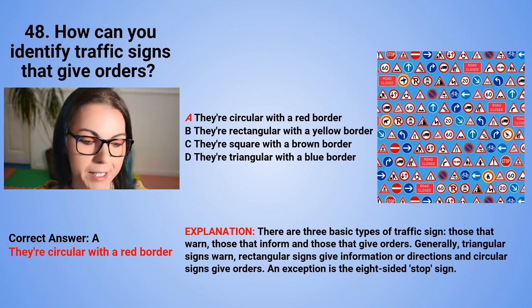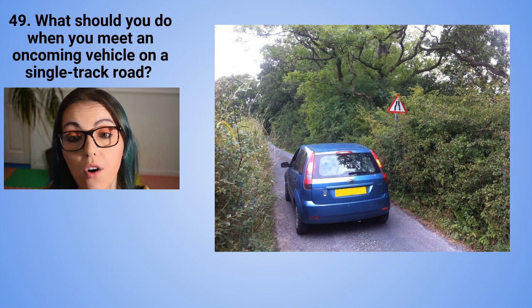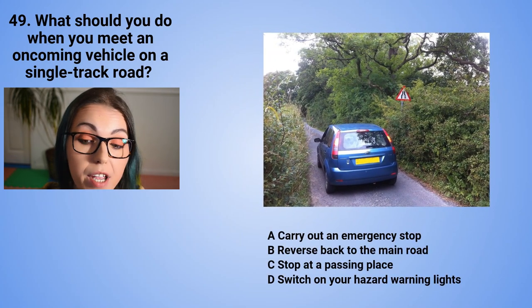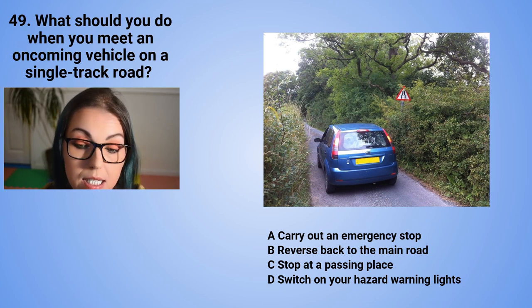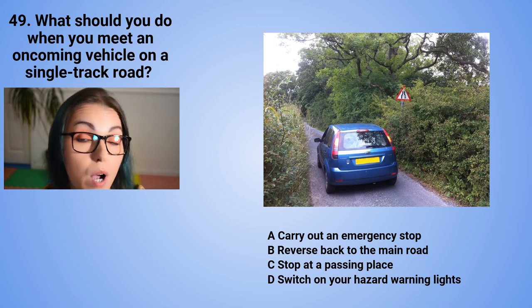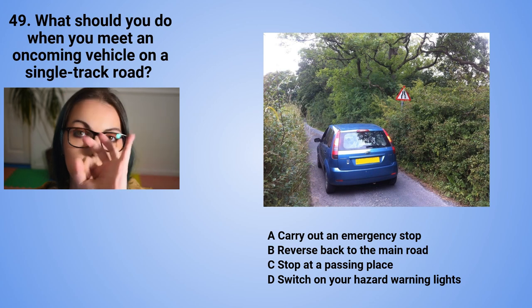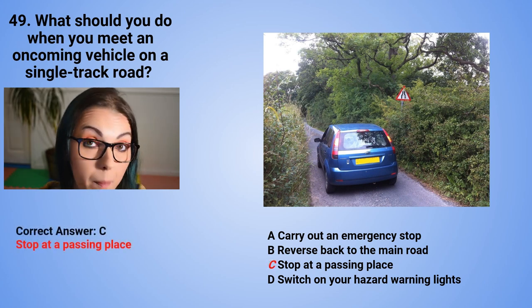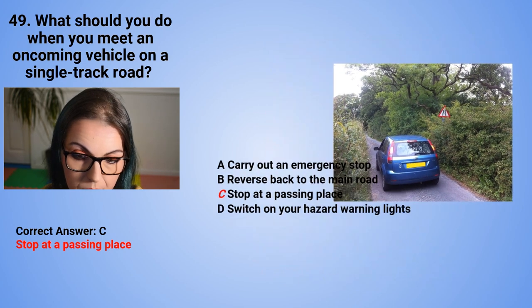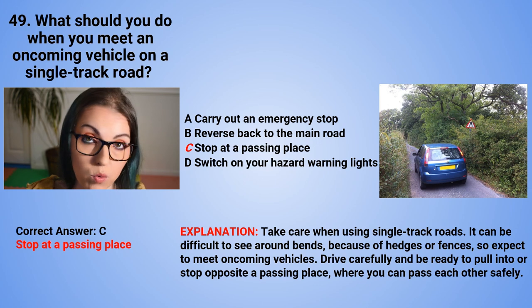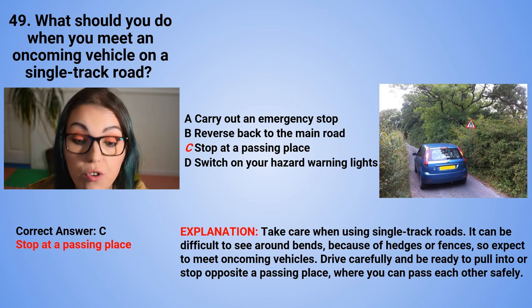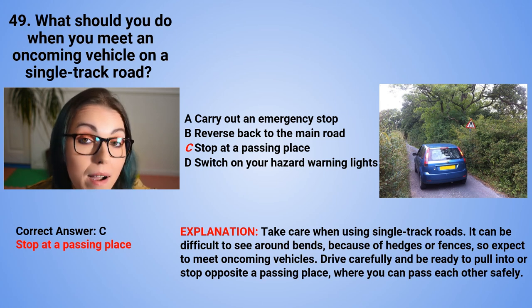Question 49: What should you do when you meet an oncoming vehicle on a single track road? A. Carry out an emergency stop. B. Reverse back to the main road. C. Stop at the passing place. Or D. Switch on your hazard warning lights. The correct answer is C — stop at the passing place. Take care on single track roads as it can be difficult to see around bends due to hedges or fences. Expect to meet oncoming vehicles. Drive carefully and be ready to pull into or stop opposite a passing place where you can pass each other safely.